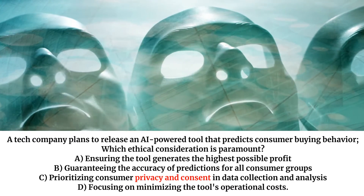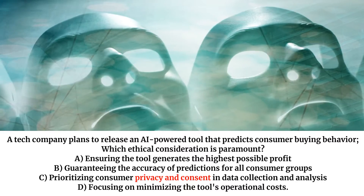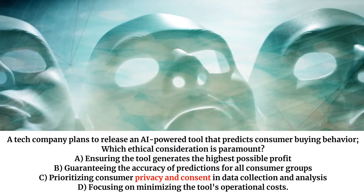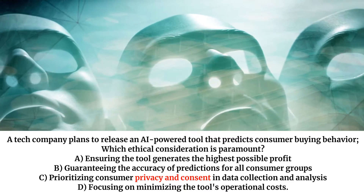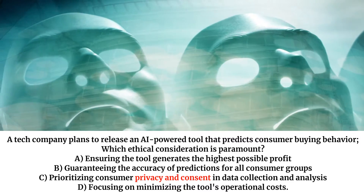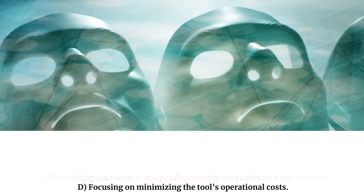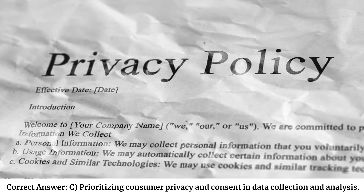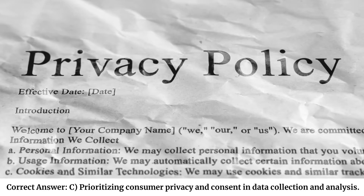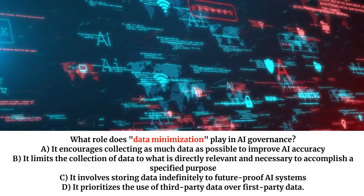A tech company plans to release an AI-powered tool that predicts consumer buying behavior. Which ethical consideration is paramount? A. Ensuring the tool generates the highest possible profit. B. Guaranteeing the accuracy of predictions for all consumer groups. C. Prioritizing consumer privacy and consent in data collection and analysis. D. Focusing on minimizing the tool's operational costs. Correct answer: C. Prioritizing consumer privacy and consent in data collection and analysis.